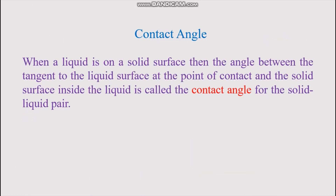Let's start with the definition of contact angle. When a liquid is on a solid surface, the angle between the tangent to the liquid surface at the point of contact and the solid surface, measured inside the liquid, is called the contact angle for that solid-liquid pair. The term 'surface tension' is technically not correct — it should better be called 'interfacial tension,' because every two phases have a common surface.